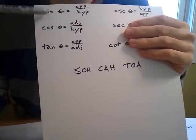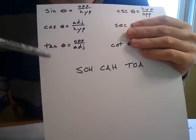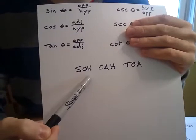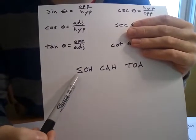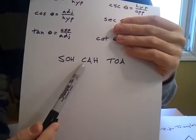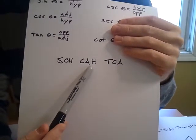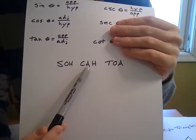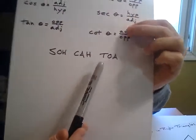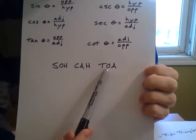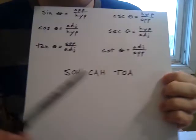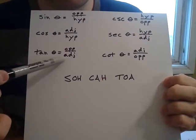And it stands for all of these. These are the ones we're going to use the most. Your sine is your opposite side divided by your hypotenuse. Just like we said earlier, sine is opposite over hypotenuse. Cosine, C, is adjacent over hypotenuse. Cosine, adjacent over hypotenuse. And TOA, tangent is opposite over adjacent. Tangent, opposite over adjacent. Tangent is opposite over adjacent.